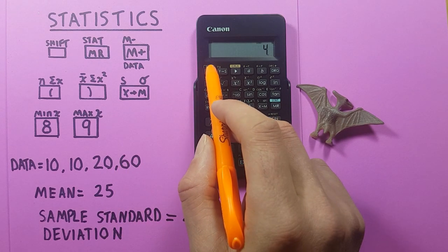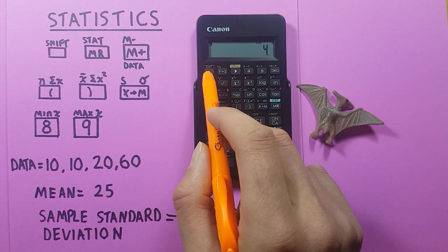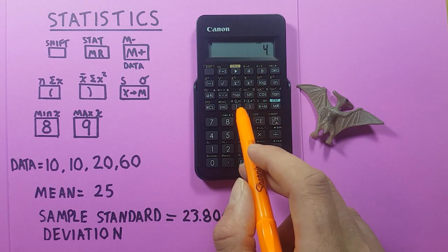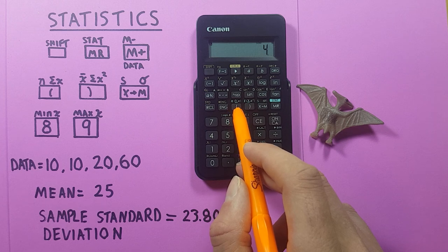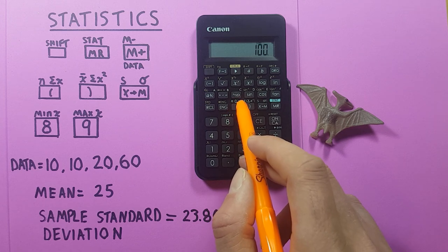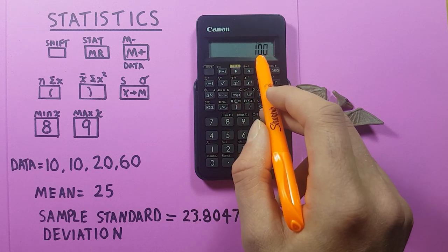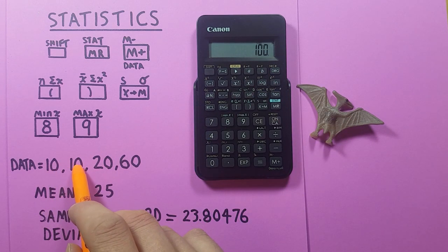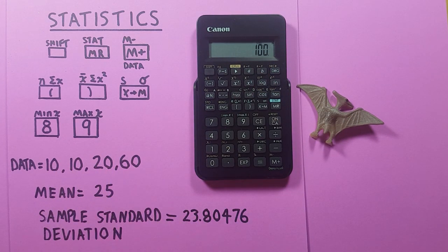We can also use the shift key to find some more statistics. Press shift, there's our S on top, letting us know we're in shift mode. This same N key, shift mode, will give us the sum of values. For this one it's 100. 10 plus 10 plus 20 plus 60 equals 100.